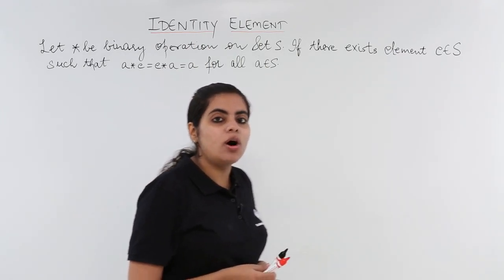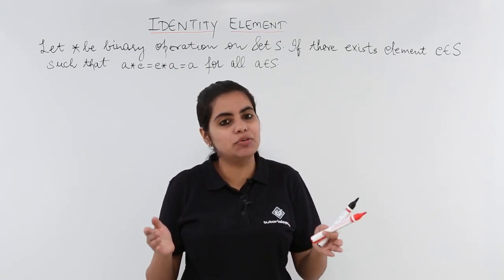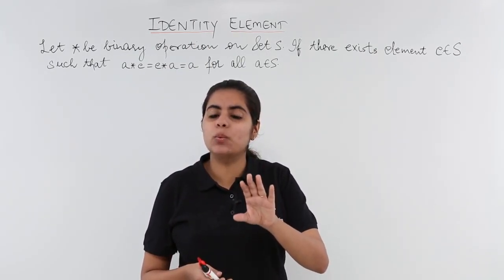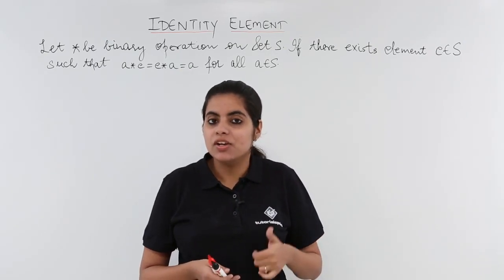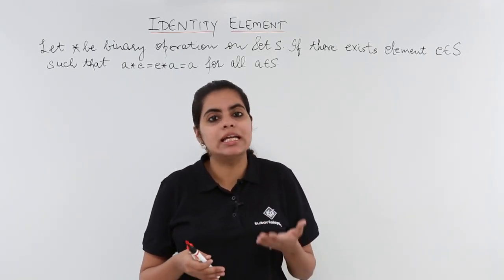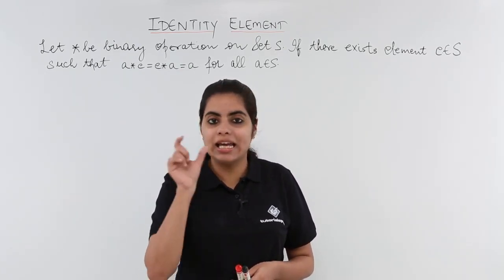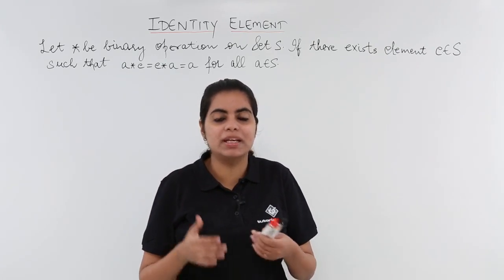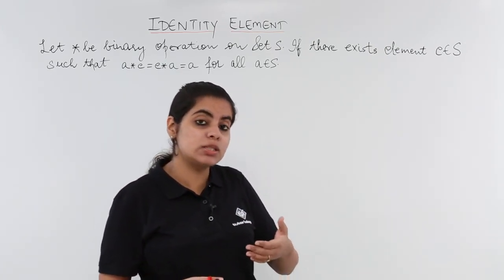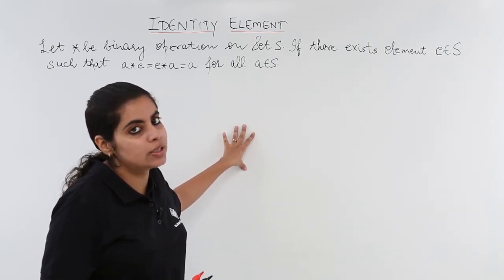Now we all are aware of the word identity. It has different meaning in different fields. In mathematics, identity would mean which remains as it is. Remember we did identity relation which was similar in some respects to reflexive relation, wherein we had (a, a) in ordered pair, that means the same thing. Similarly, identity element is what? Let's read and understand the same with the help of some theoretical approach.